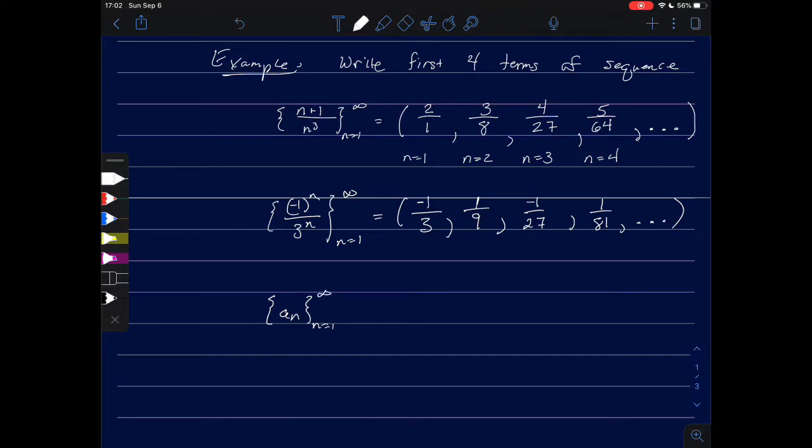For our final example, let's take a look at an, as n ranges from 1 to infinity, where a sub i, or the i-th one in this list, is the i-th digit of e. So we're listing the first four terms. E is 2.718, and it just keeps going on.